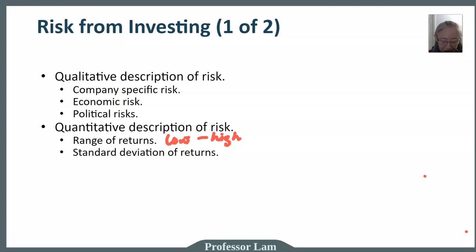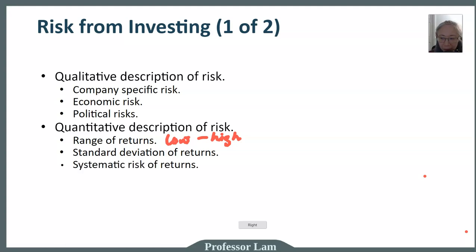Those familiar with statistics can also use standard deviation — on average, how far a particular outcome can be given the probability. Range of outcomes gives you possible extremes; standard deviation augments the range with probability. For example, what are the chances that a particular stock or the stock market may lose more than ten percent in one year? Standard deviation gives you that probability.